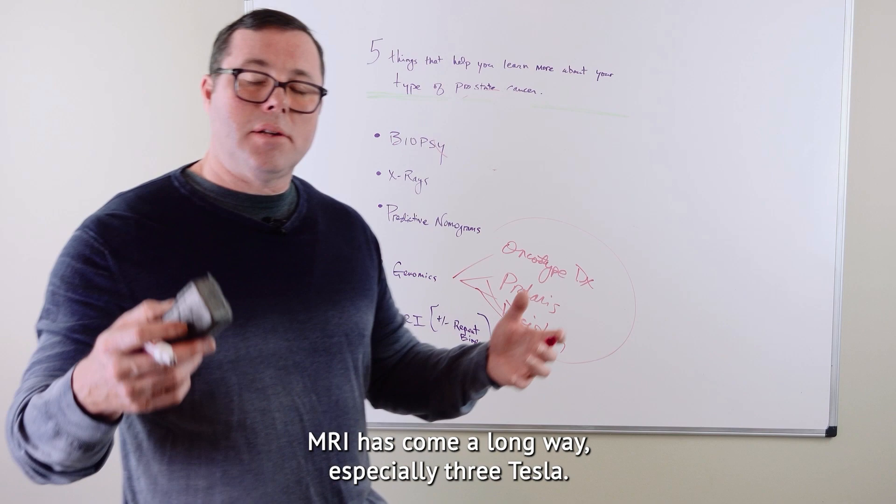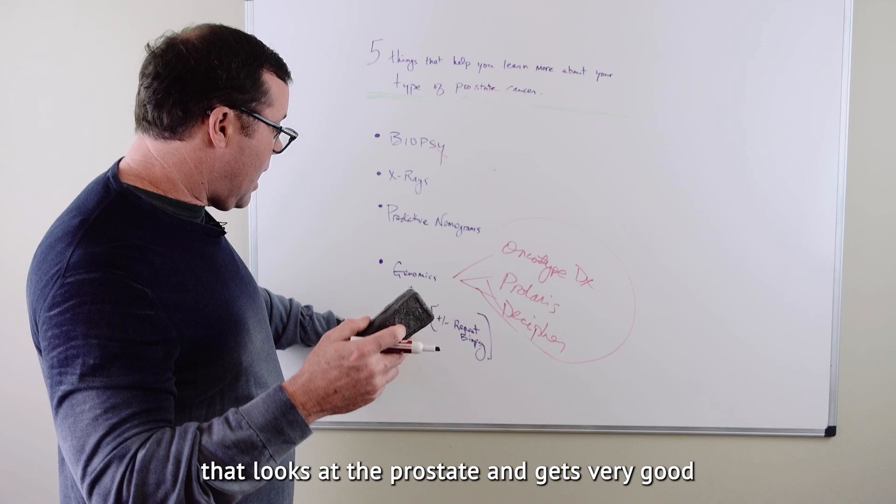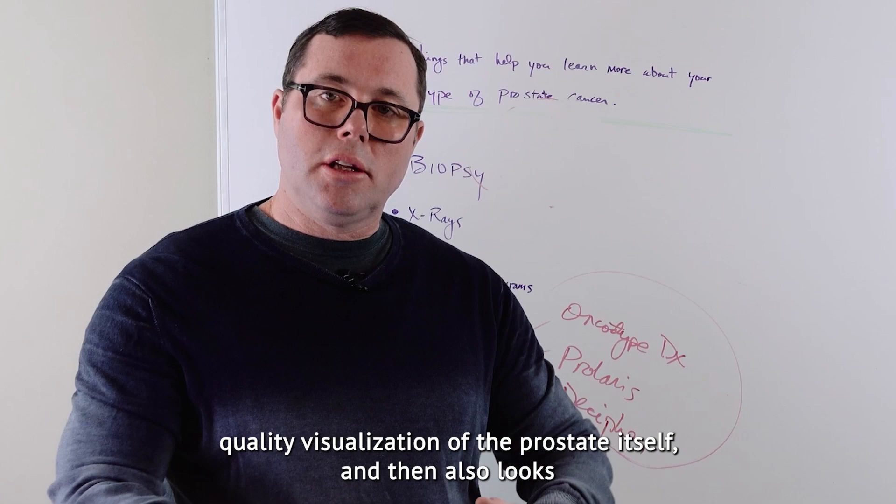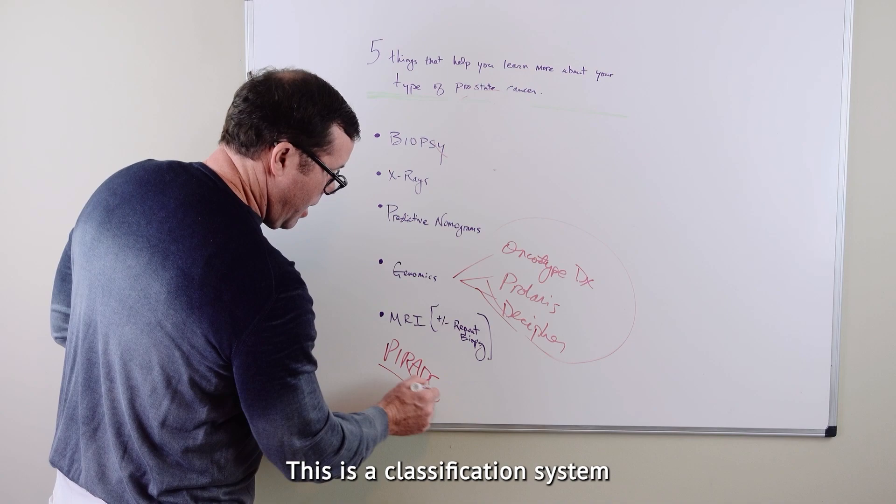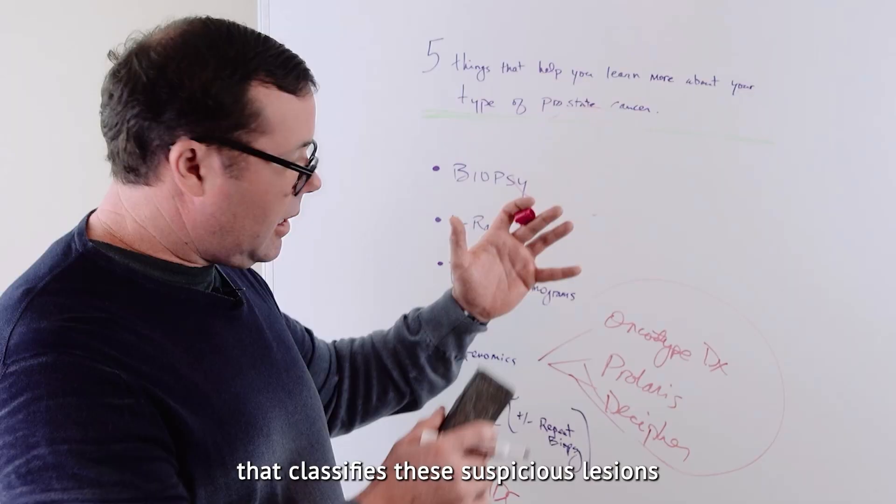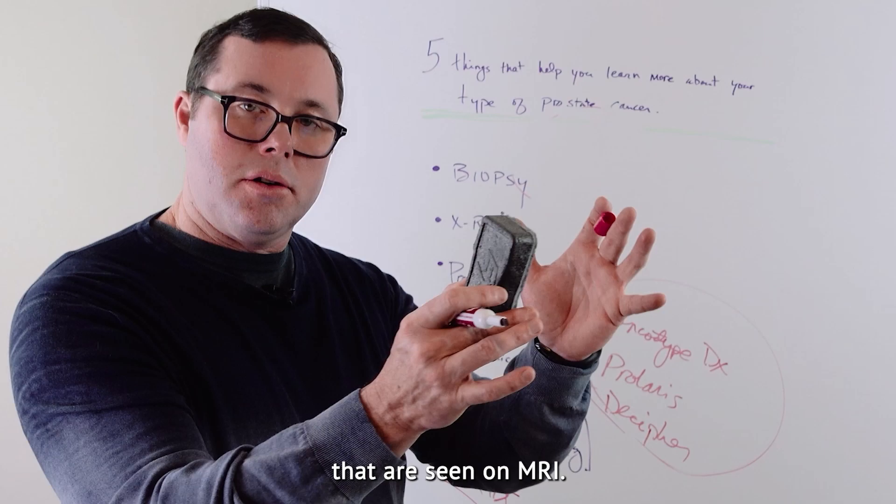And then the last thing is MRI. MRI has come a long way, especially three Tesla, a higher power magnet MRI that looks at the prostate and gets very good quality visualization of the prostate itself. And then also looks at suspicious lesions in what are called PI-RADS. This is a classification system that classifies these suspicious lesions that are seen on MRI.